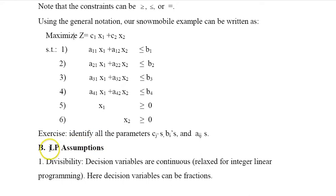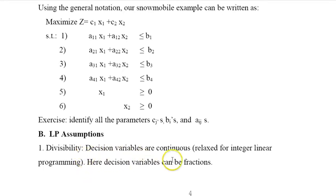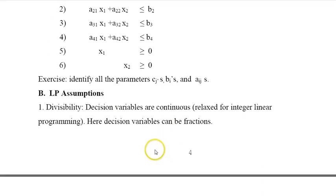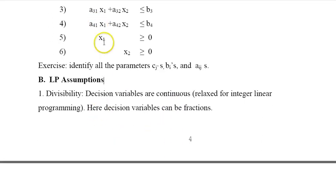But before we get to that, for linear programming - and linear programming really refers to linear optimization - for us to be able to formulate a problem as a linear program, we need certain assumptions to be valid. One of them is divisibility - decision variables are continuous. It means they can be fractions.